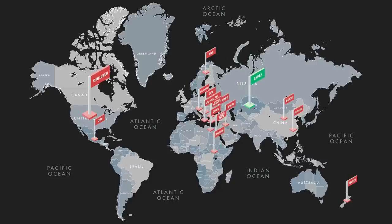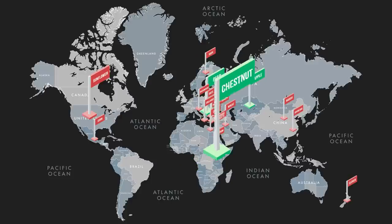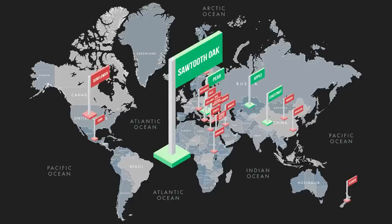Now let's look at some tree species that whitetail land managers commonly plant. Did you realize that apples are from Kazakhstan — they're not native to North America? Pears come from Asia. Chestnuts — the Dunstan chestnut that everybody raves about — is a hybrid cross between the American chestnut and a Chinese chestnut. Sawtooth oaks are commonly planted by whitetail land managers and yet they are from Asia. If you're trying to stick with 100% all-native species, you're going to have a very difficult time.